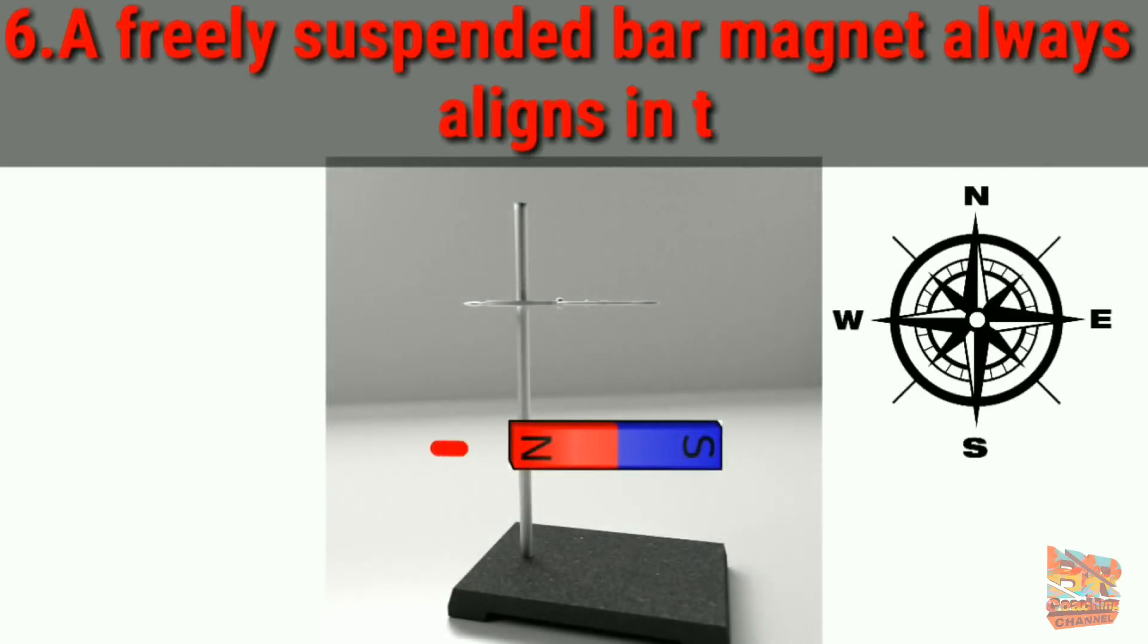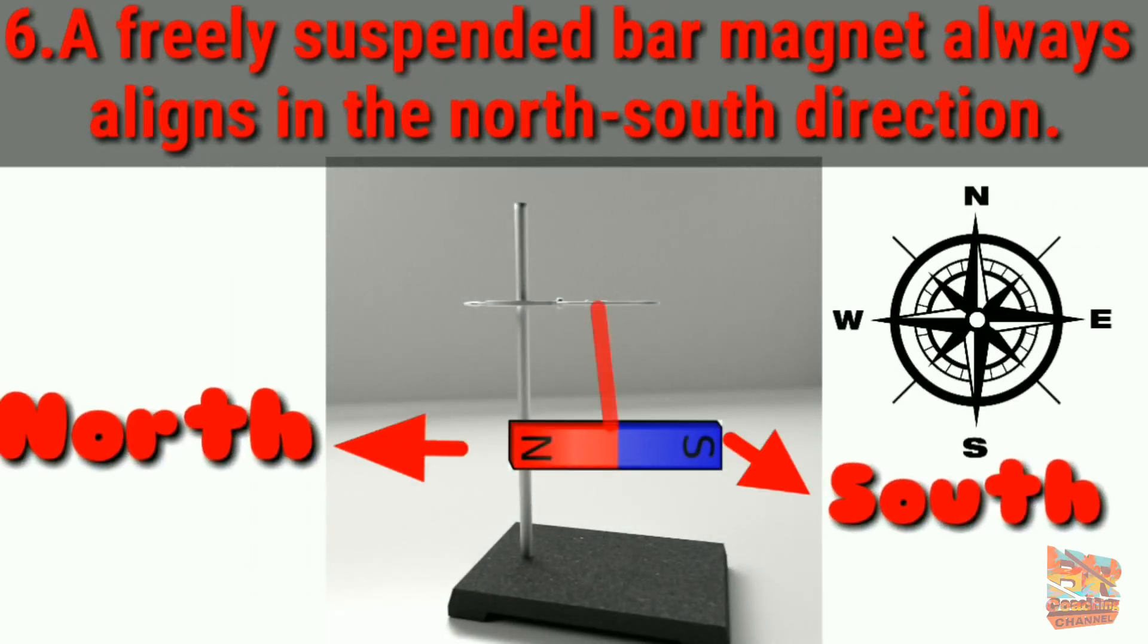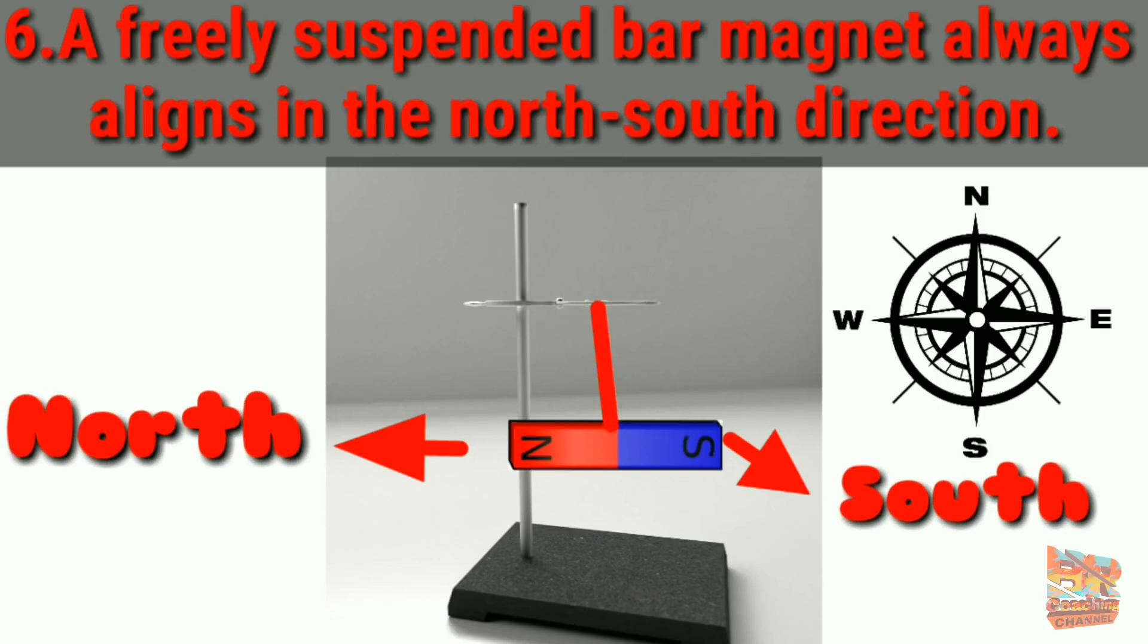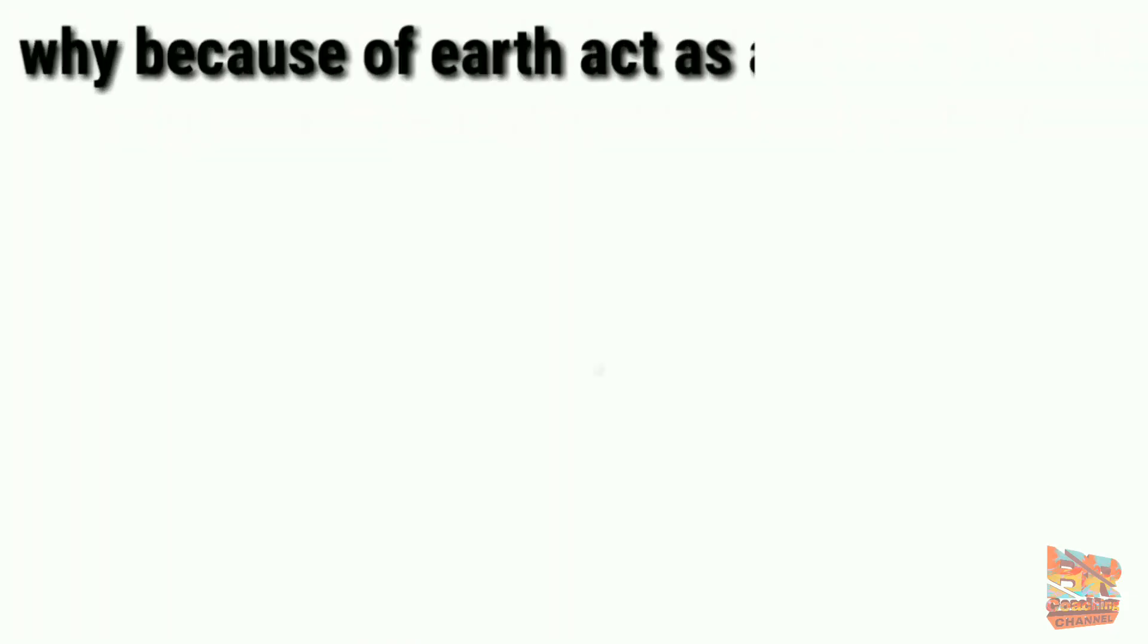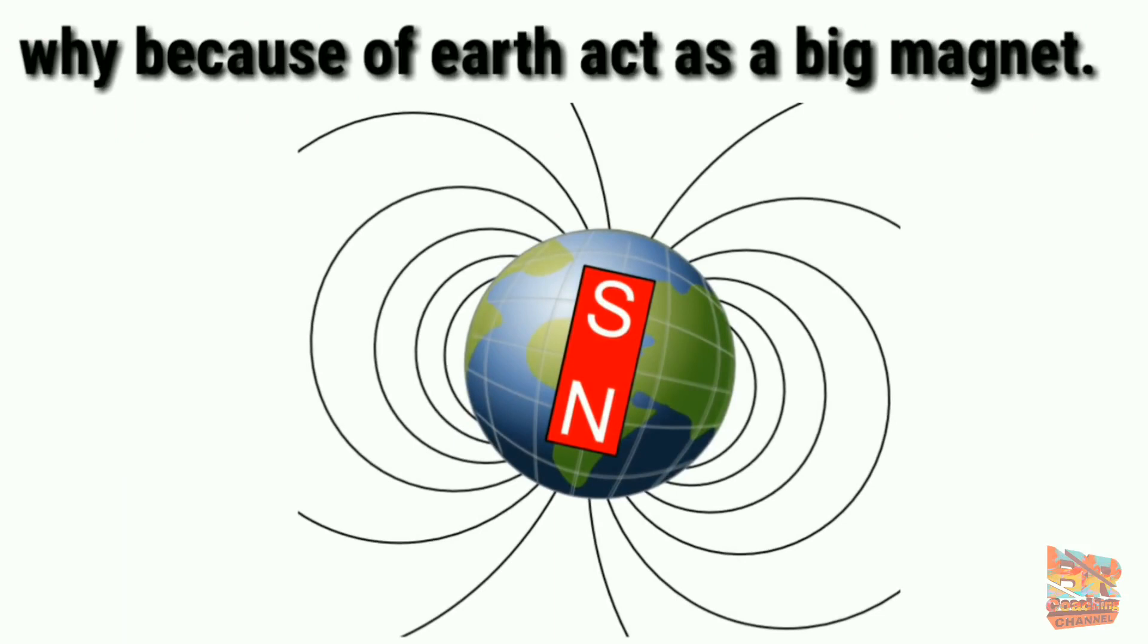Sixth property: A freely suspended bar magnet always aligns in the north-south direction. Why? Because earth acts as a big magnet.